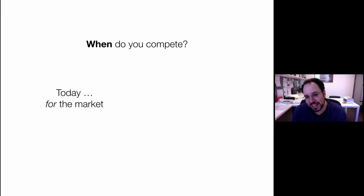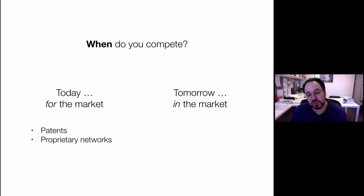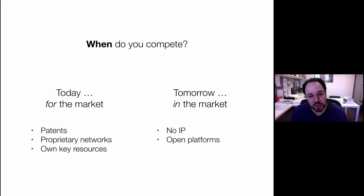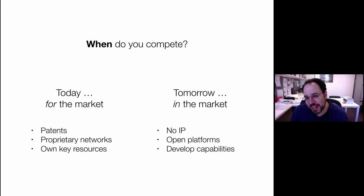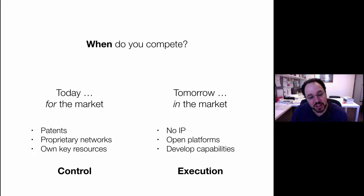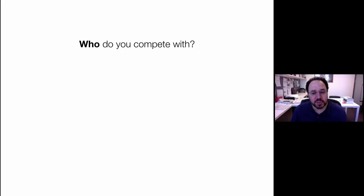Competing today for the market versus tomorrow in the market. Examples of competing today: securing a patent, having a proprietary network, or owning key resources that allow you to have a monopoly going forward. The alternative — playing tomorrow in the market — means not having IP, having open platforms, but making your money in the future on capabilities that are superior to everybody else. Competing today for the market is where you aim at control of the market, whereas competing tomorrow in the market is where you compete by executing better than other people.